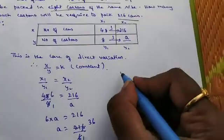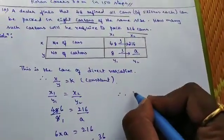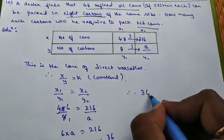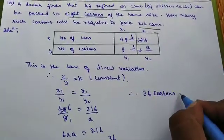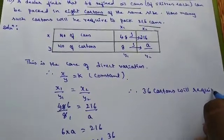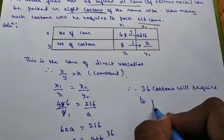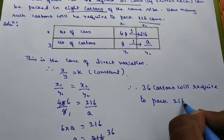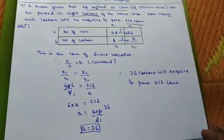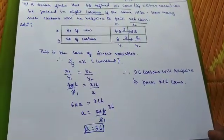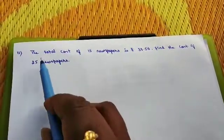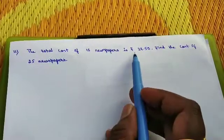So you can give the conclusion. Therefore, what is A? 36. Therefore, 36 cartons will require to pack 216 cans. So this is how we need to find children. So now we will move to 11th question.